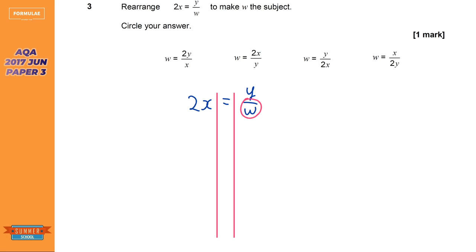So we've got a divide by W on the right hand side. We're going to first of all times by W both sides since we want to make W the subject. Now this will give us 2XW. So it's 2X times W on the left hand side and Y on the right hand side.